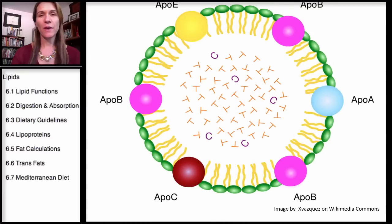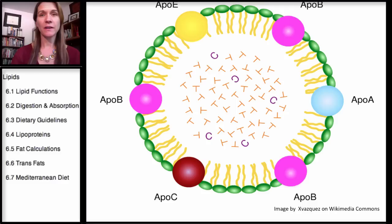This is a diagram of a lipoprotein. You can see the phospholipid bilayer — we talked about phospholipids acting as emulsifiers, allowing lipids to travel in an aqueous environment. We have the phospholipid bilayer with proteins, and then in here is a representation of cholesterol and triglycerides.